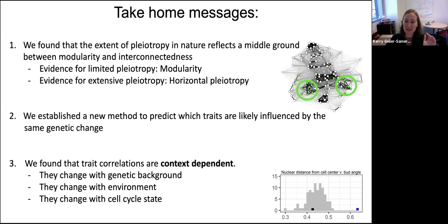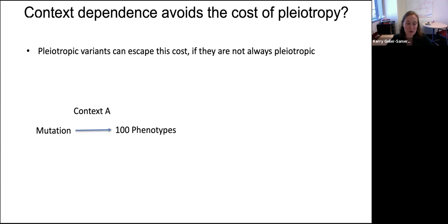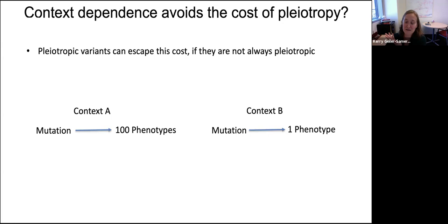It's a double-edged sword. On one hand, context-dependence is a bummer — biology is complicated and you wanted to make simple predictions. On the other hand, by understanding this context-dependence, it helps us possibly resolve the debate from the beginning of the talk. It's possible that pleiotropic genetic variants can escape the cost of pleiotropy and persist because they're not pleiotropic in every context. A mutation might affect hundreds of phenotypes in context A — super pleiotropic and probably deleterious — but in a separate environment B, it might only really affect one phenotype and be allowed to persist. Context-dependence can thus help us understand observations we make in nature.